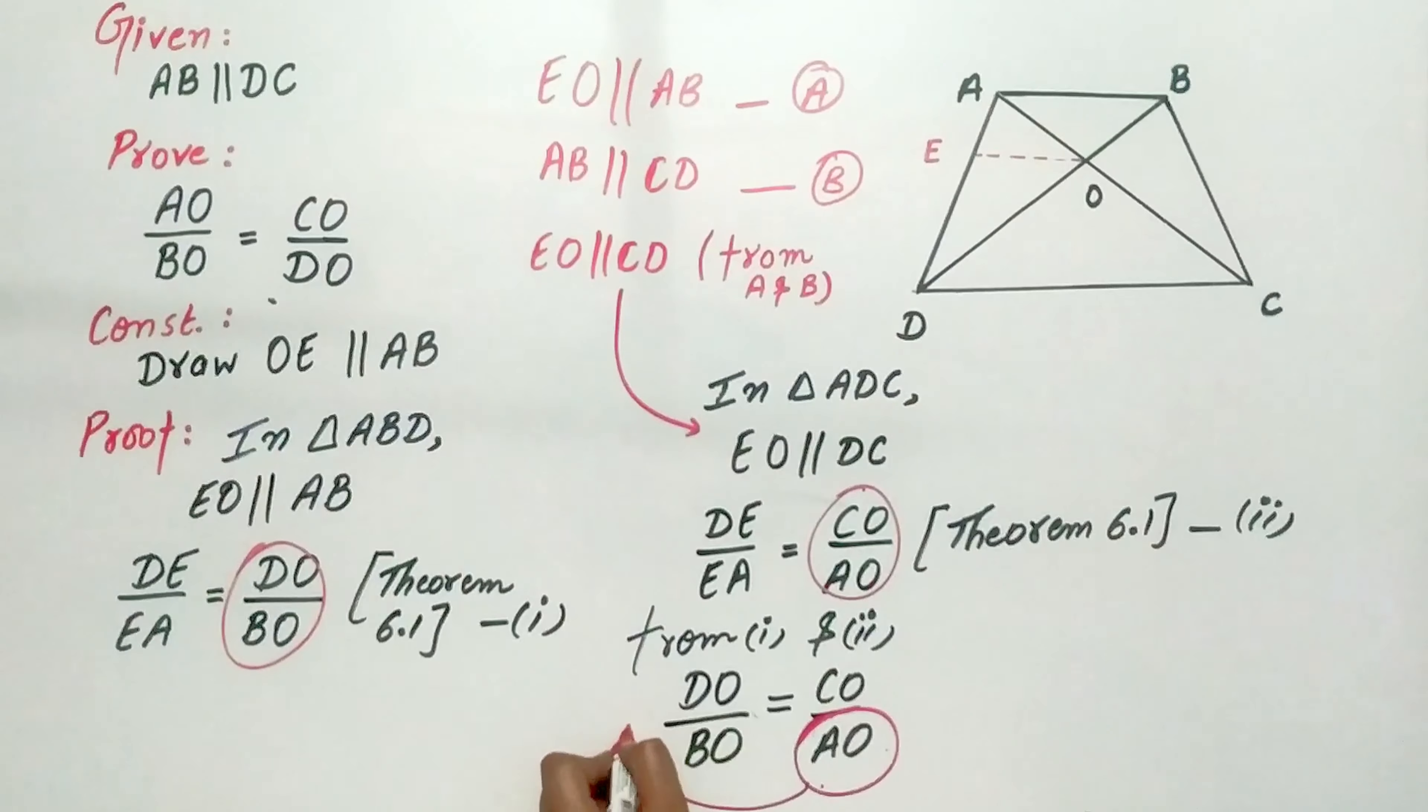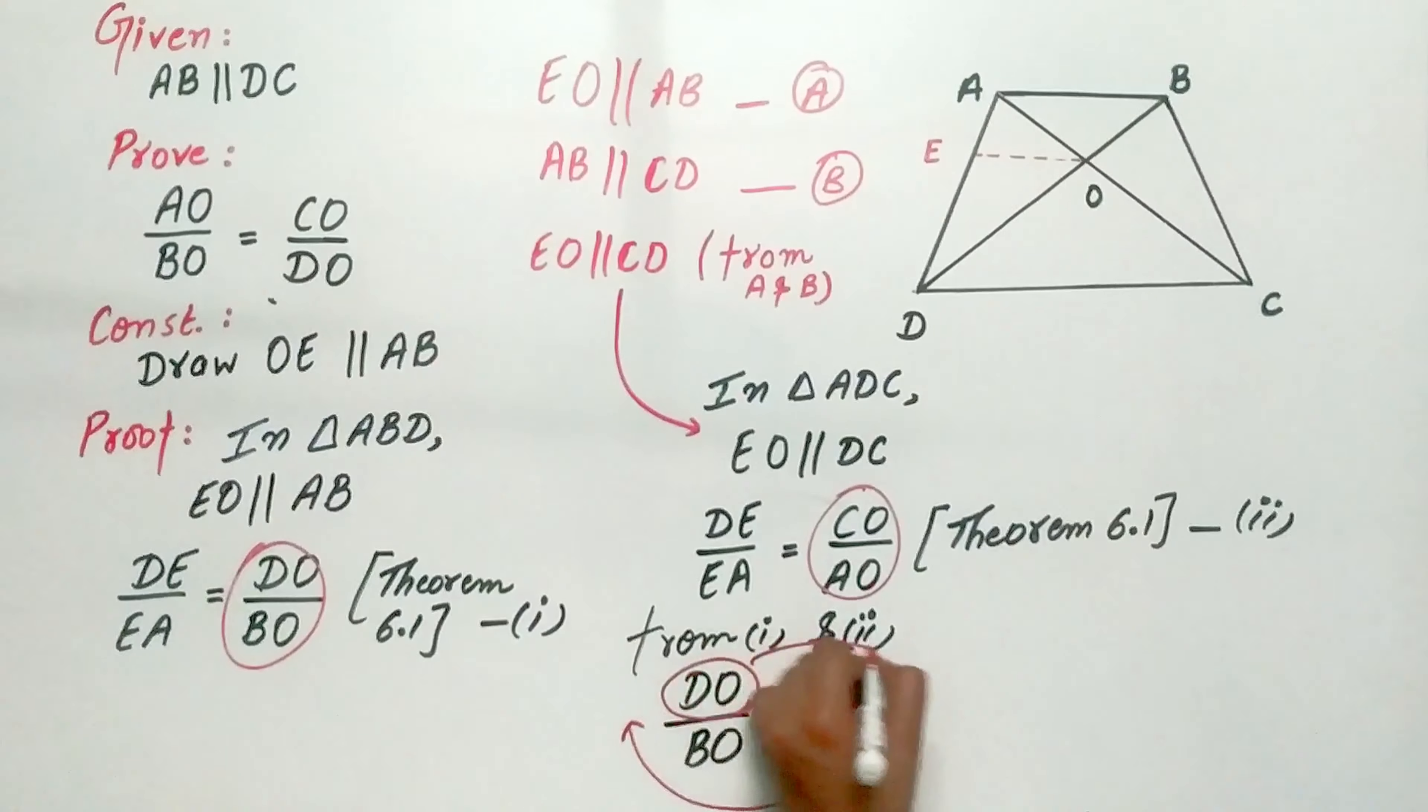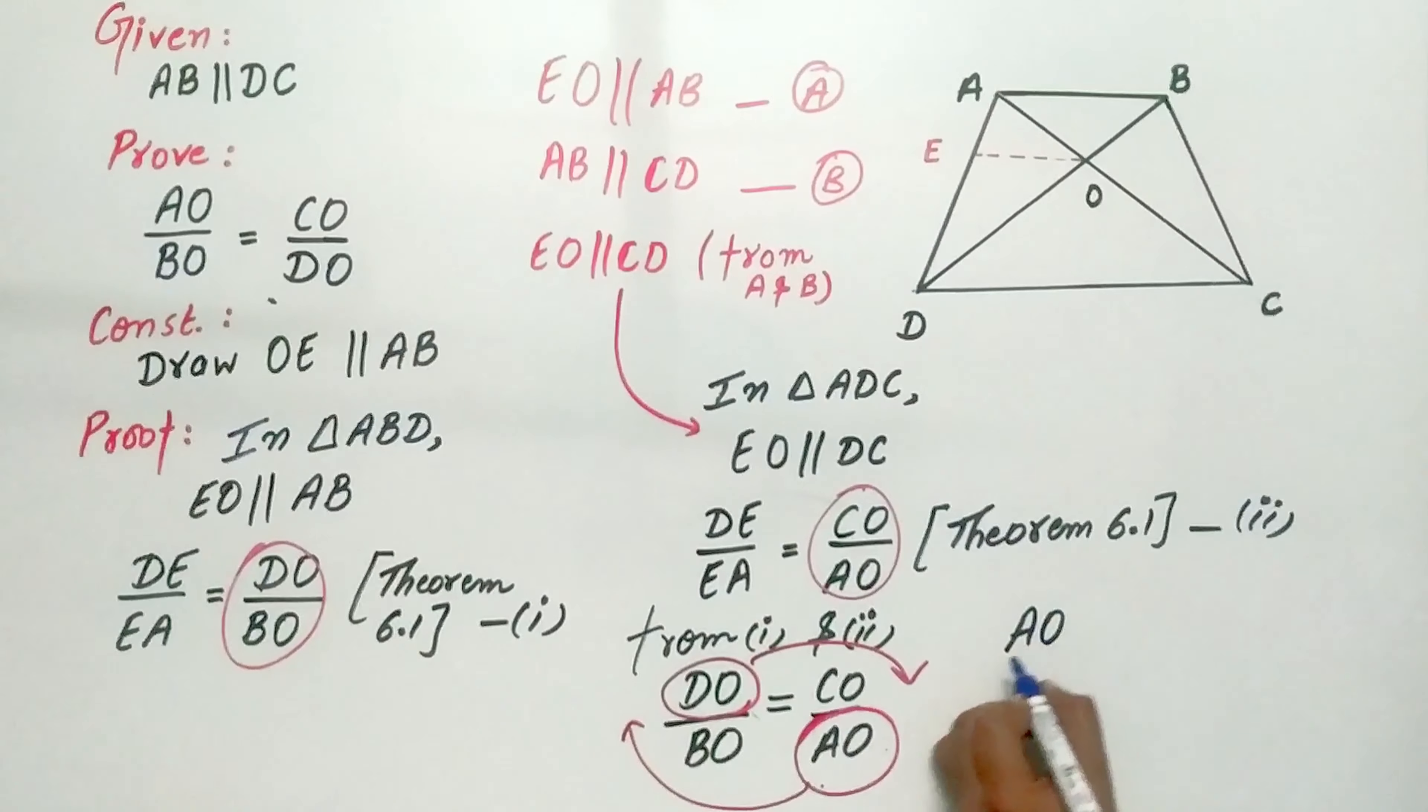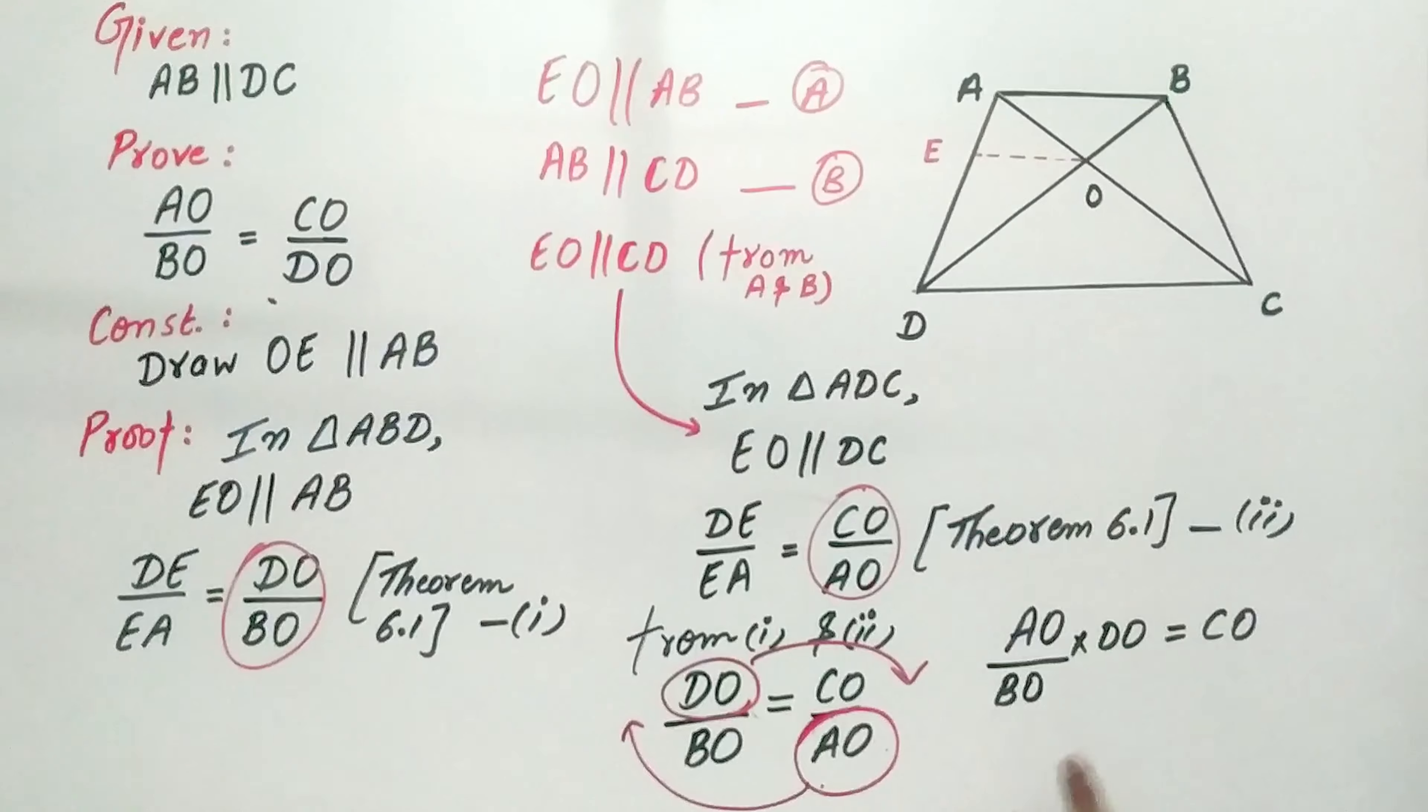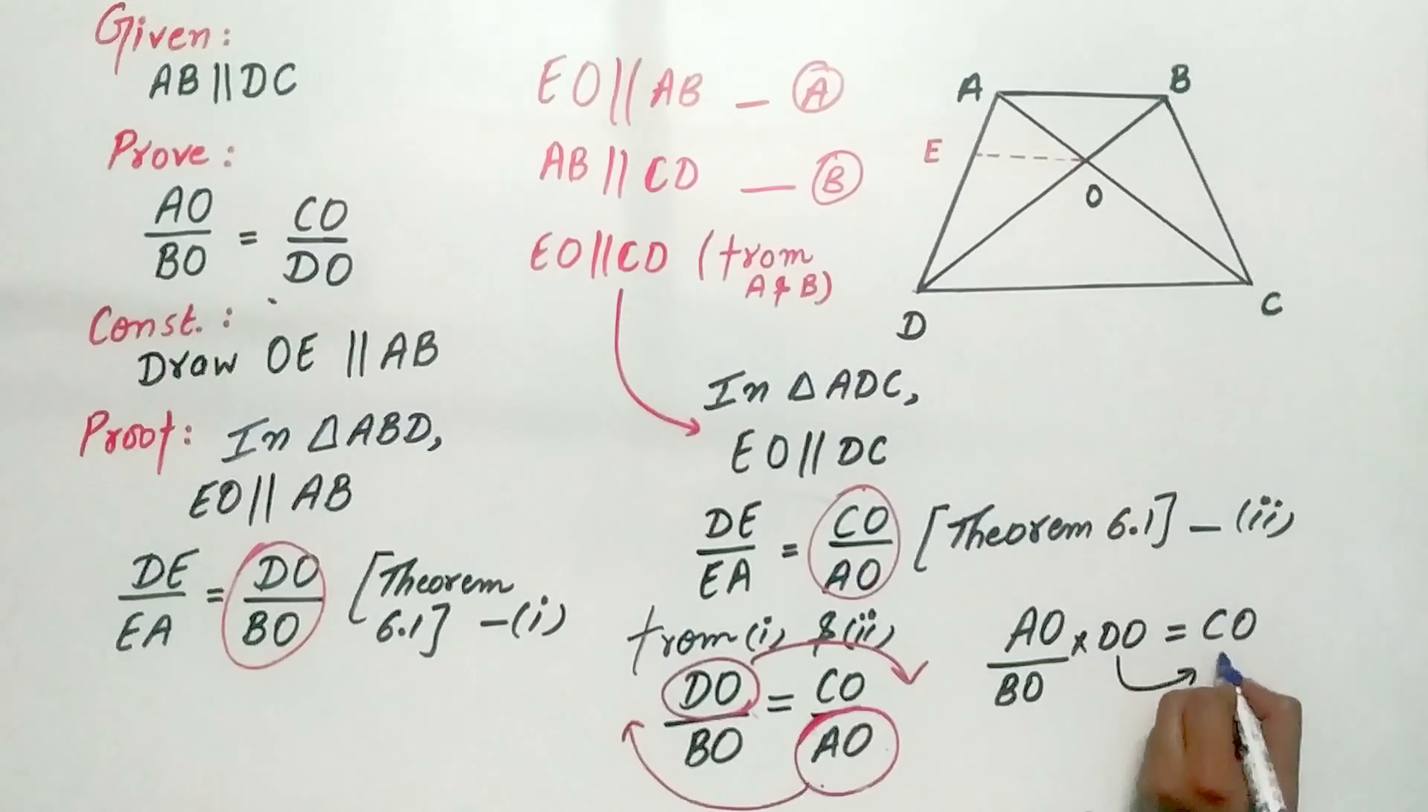AO by BO is equal to CO by DO. I have transposed AO to left-hand side. Now, transpose DO to right-hand side.